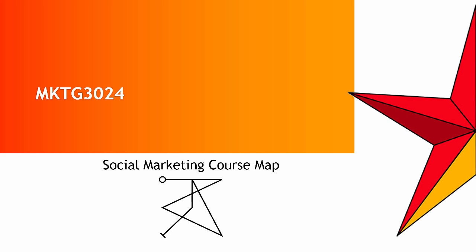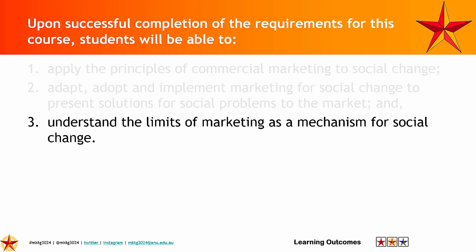Welcome to the Social Marketing Course Map, Round 3, in which we have a look at the closeouts, the third and final elements of the course. The assignments you have just undertaken, Assessment Tasks 1 and 2, have given you an opportunity to experience the limits of marketing as a mechanism for social change. By asking you to use these tools and techniques, you have found how they work, documented what you would like to use them for, and how they sit together.